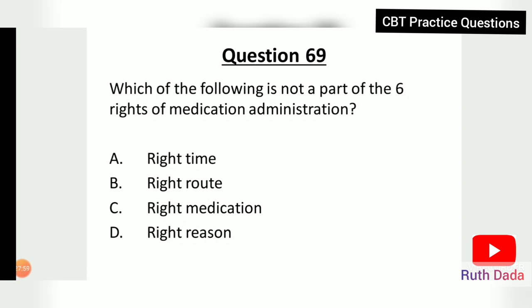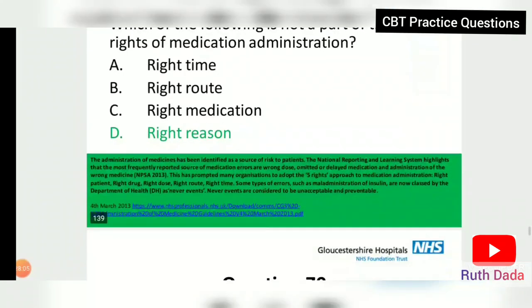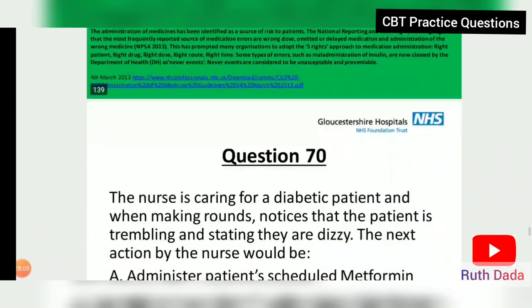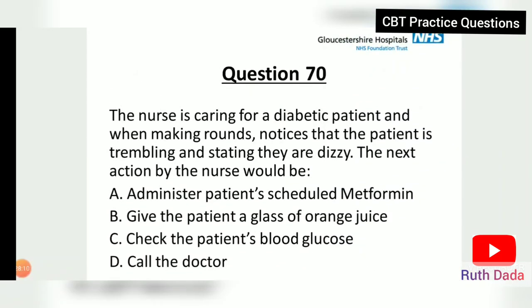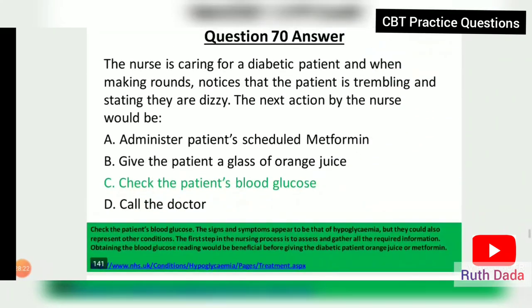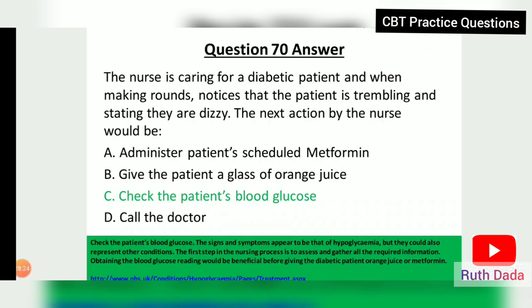Question 69: Which of the following is not a part of the six rights of medication? The answer is reason. Question 70: The nurse is caring for a diabetic patient and notices the patient is trembling and stating they are dizzy. The next action by the nurse would be to check the patient's blood glucose.